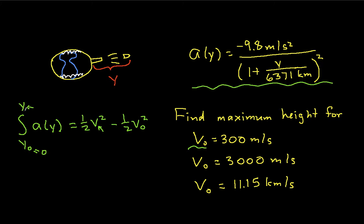We're trying to find y, where y would be the maximum distance that our projectile gets from the Earth. And the way we'll do that is by noticing that when the projectile is as far away from the Earth as it's going to go, its velocity is 0.